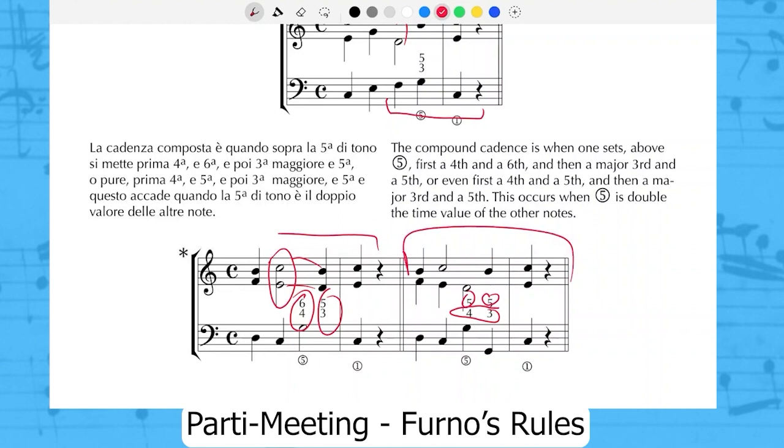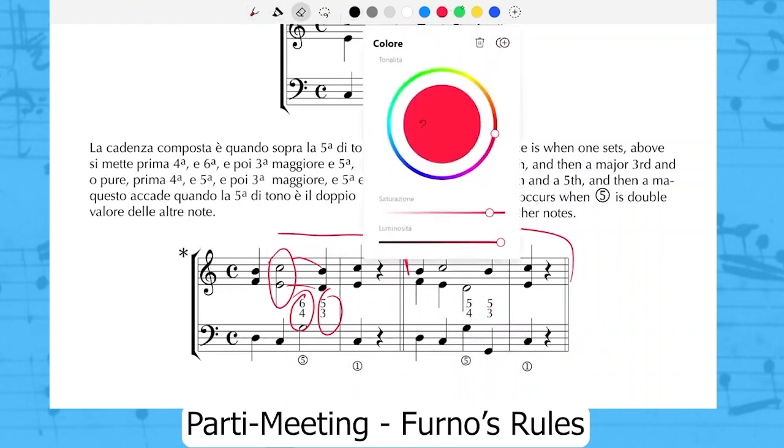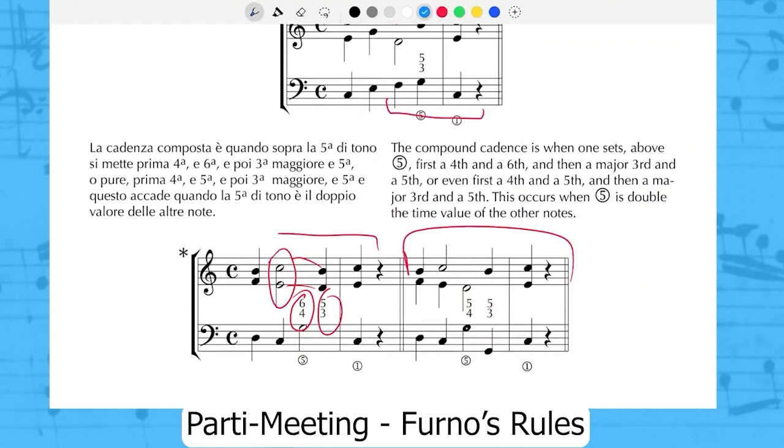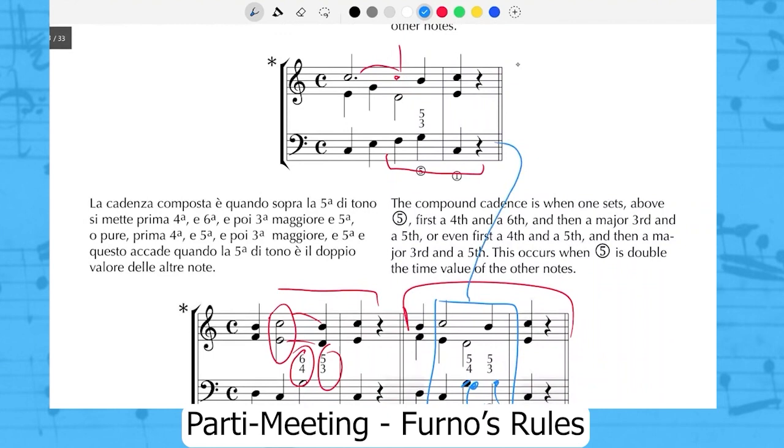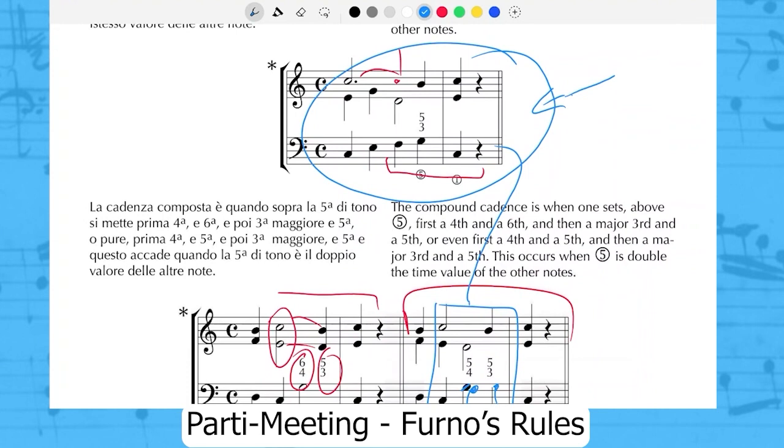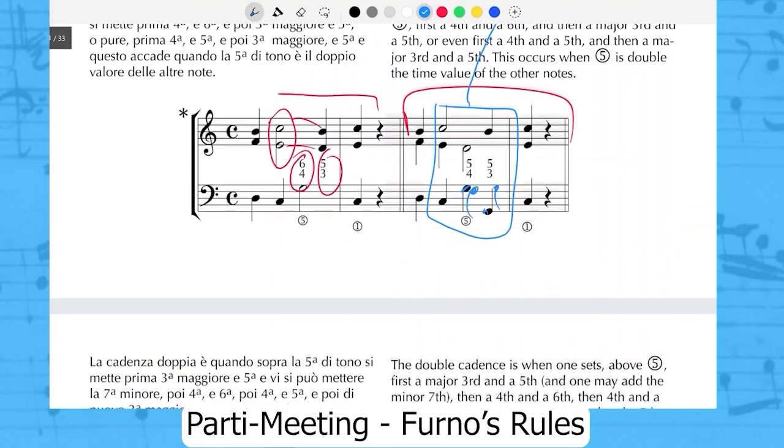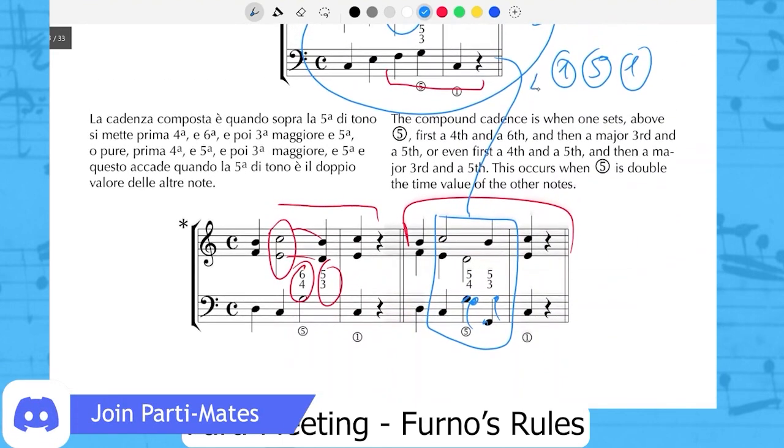In the second example, we have the suspension four-three. Now let's imagine that at the place of this G we have an F, then a G. We have the same situation of this cadence that Furno calls simple cadence. Personally, if we want to make a classification between the three cadences, the first one as simple, in this case is not so consistent according to this three partition of cadences. A simple cadence I imagine something that is one in the bass, one-five-one according to other sources, without any kind of suspensions in any form, because here we have actually a suspension between the two upper voices. This is my opinion.